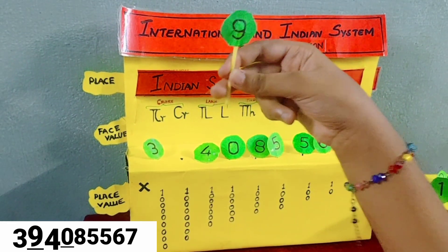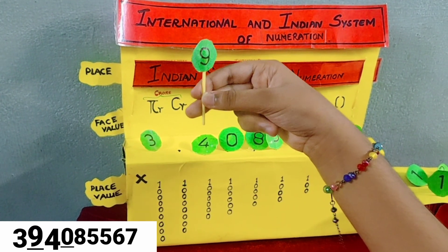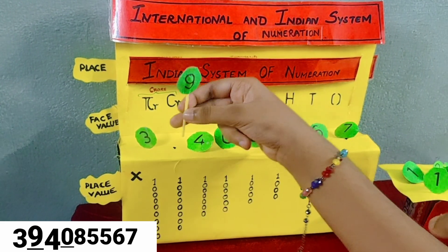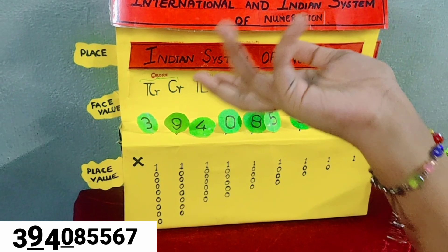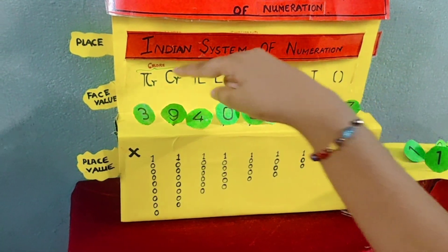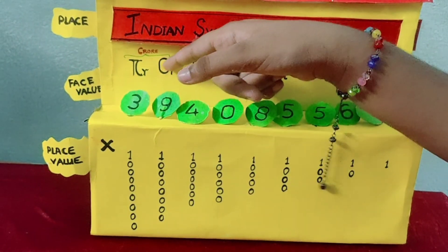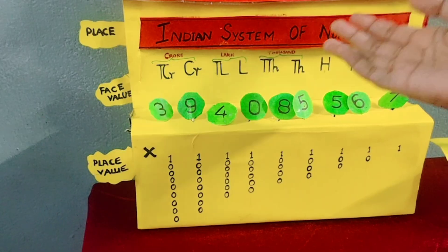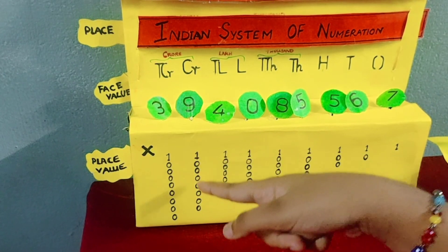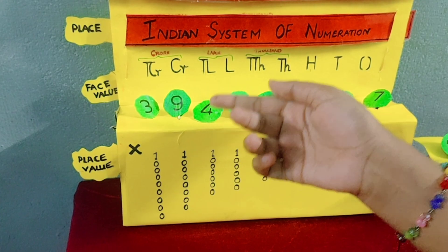Consider this digit as a person. Who is he? Look at his face — he is 9. In which place is he sitting? His place is crore. Face value of 9 is 9, and his place is crore. Now, what is his place value? 9 multiplied by crore, so 9 crore.